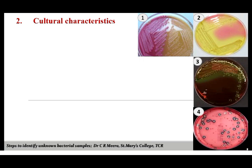After studying cultural characteristics on basal media like nutrient agar or nutrient broth, we can move on to special media that bring out special characteristics of the organisms. Differentiation of microorganisms that are morphologically and biochemically related is quite difficult, and the use of special media such as differential, selective, and enrichment media makes the identification process much easier. Some media can act as both differential and selective.